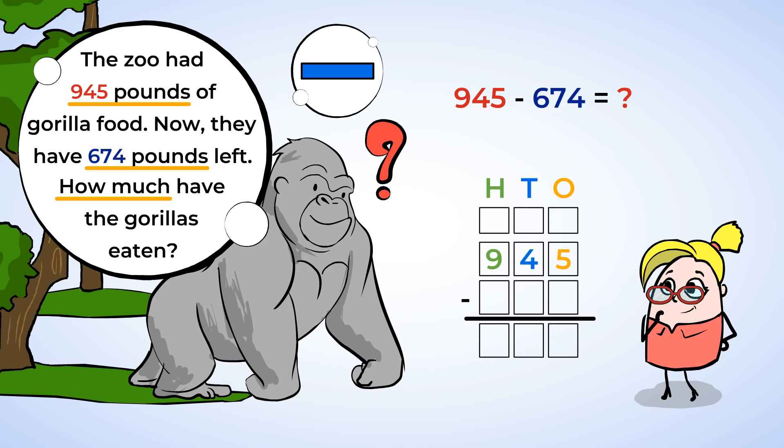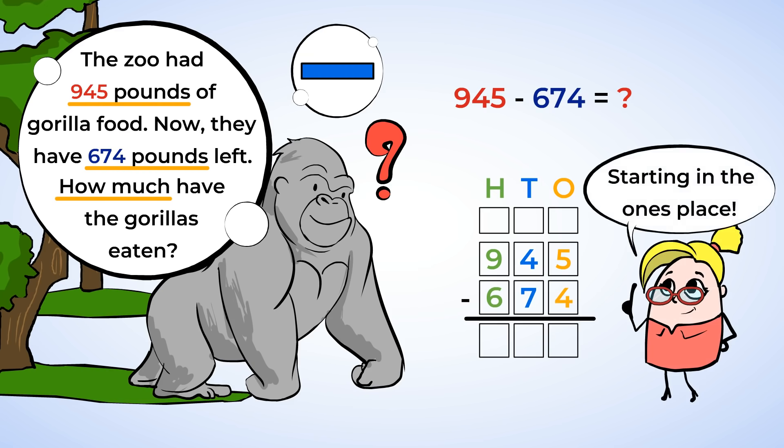And now for the number we're subtracting. The zoo has 674 pounds of food left. That's 6 hundreds, 7 tens, and 4 ones. Starting in the ones place, like always, we do 5 minus 4, which leaves us with 1. We write a 1 in the ones place.